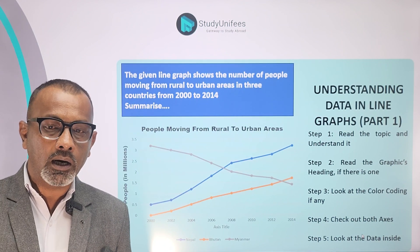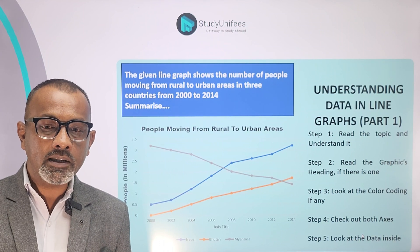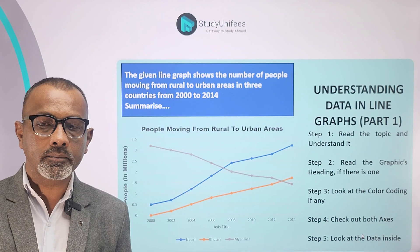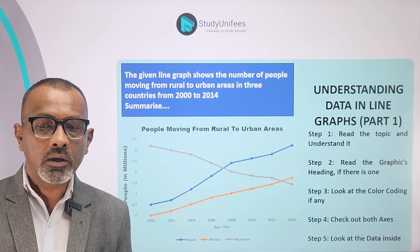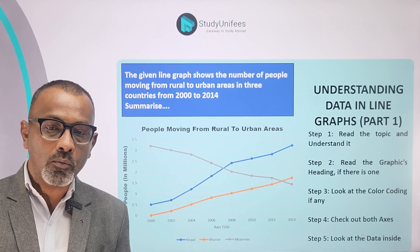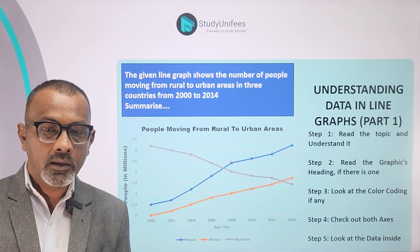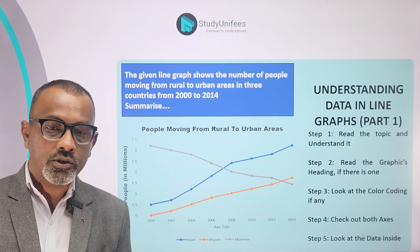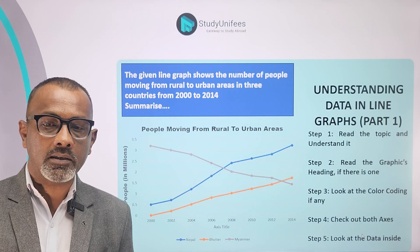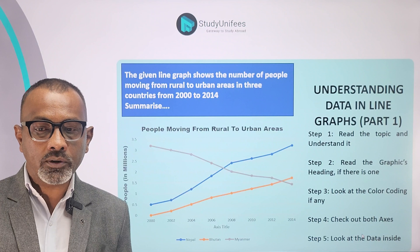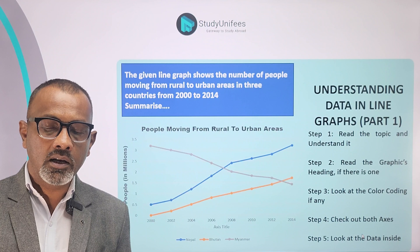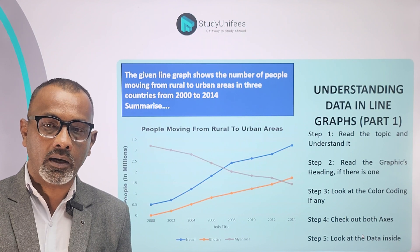Step number 3: look at the color coding. The color coding is that of the lines and it shows three countries — Nepal, Bhutan, and Myanmar. Step number 4: check out both axes. The vertical axis shows the number of people moving in millions — 0.5, 1, 1.5, 2 million and so on. The horizontal axis shows the timeline from 2000 to 2014. This is the first part of analysis whenever you are looking at a line graph.